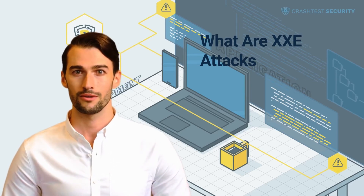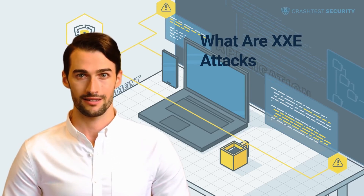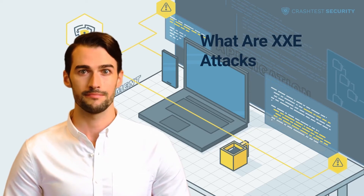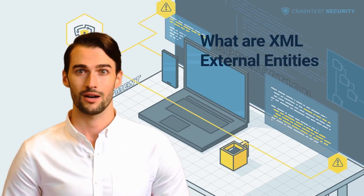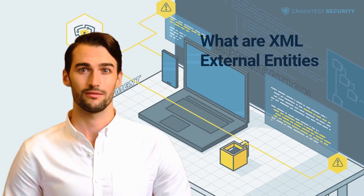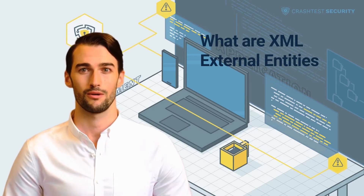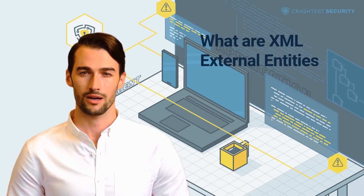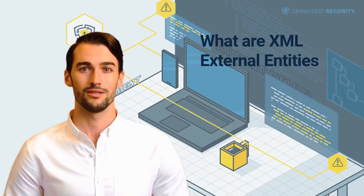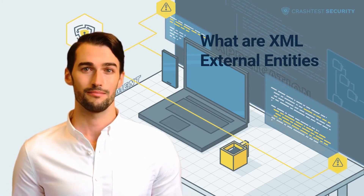It is, therefore, prudent to understand the nature of these attacks and how they can be prevented. External entity profiles are defined by outside sources, such as a file on a local computer or a web URL. Such entities ensure that the XML processor behaves consistently even when unexpected characters are parsed.